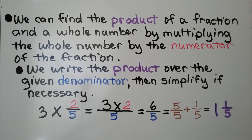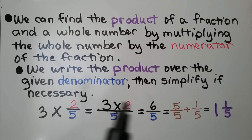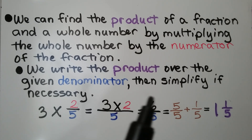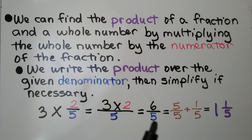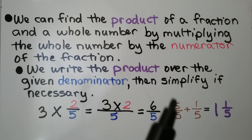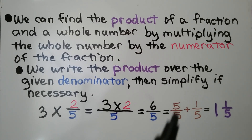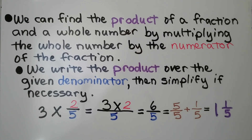We have 3 times 2 fifths. We do 3 times 2 over the denominator of 5. 3 times 2 is 6, we have 6 fifths. And we can rename this as 5 fifths plus 1 fifth. Same numerator and denominator, that's equal to one whole. We have 1 and 1 fifth.